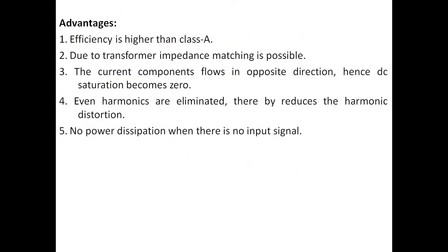Now let us look at the advantages of Class B push-pull amplifier, compared mainly with Class A. First, the efficiency of Class B is higher than Class A. Due to the transformer, impedance matching is achieved. The transformer has low impedance, enabling maximum output power delivery across the load — this is the advantage of better impedance matching.